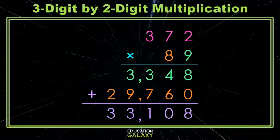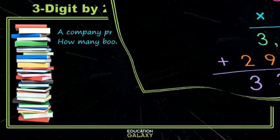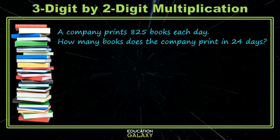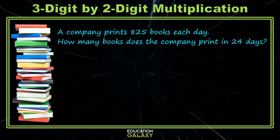Okay, let's see if we can apply this to a real world example. Here we have a company printing 825 books each day, and we want to know how many they print in 24 days. So we find this total with multiplication. So 825 times 24.